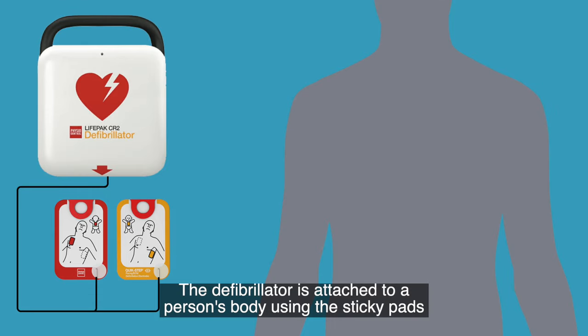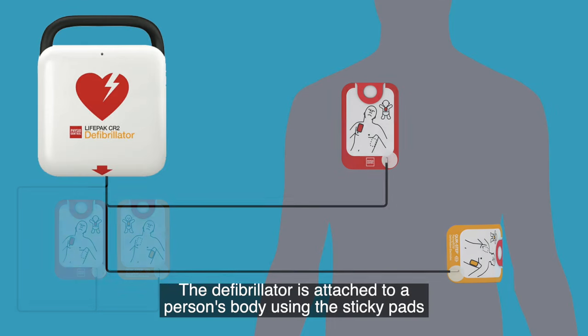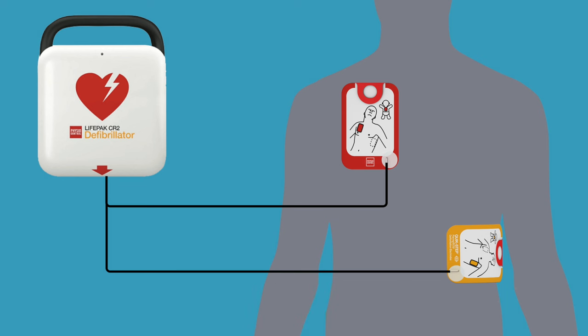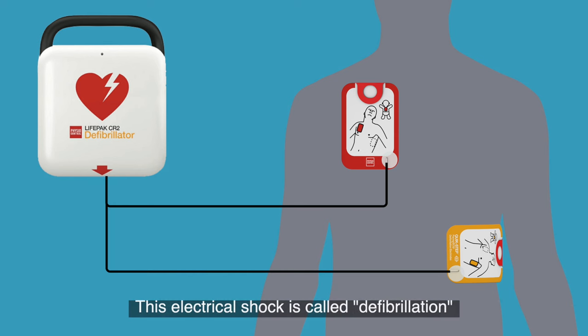The defibrillator is attached to a person's body using the sticky pads. This machine is then able to provide an electrical shock to a patient if required. This electrical shock is called defibrillation and is used to correct an abnormal heart rhythm.